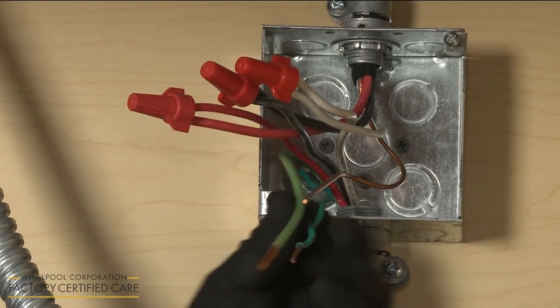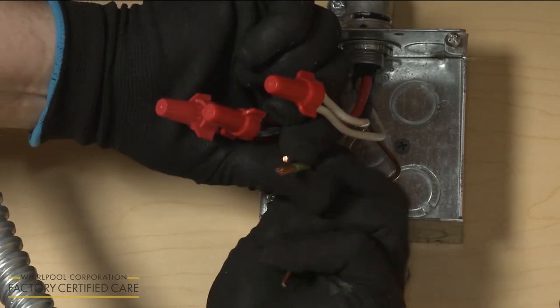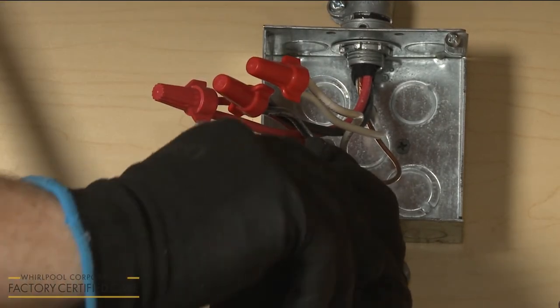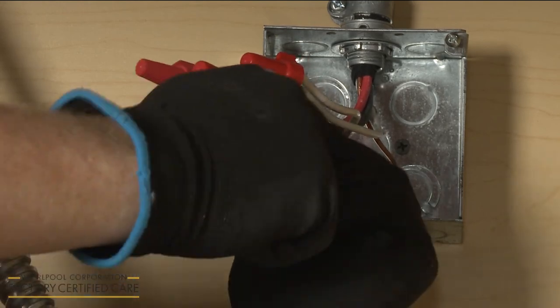If your junction box has a 4-wire power supply line, join the green or bare grounding wire, or wires, to the bare grounding wire from the cooktop and secure them with a wire nut.